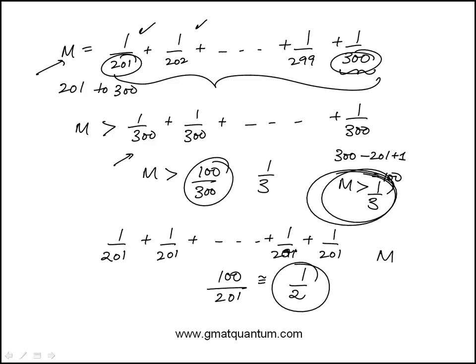The sum M has to be less than that. So the inequality is M is greater than 1 third and less than 1 half, which is choice A.